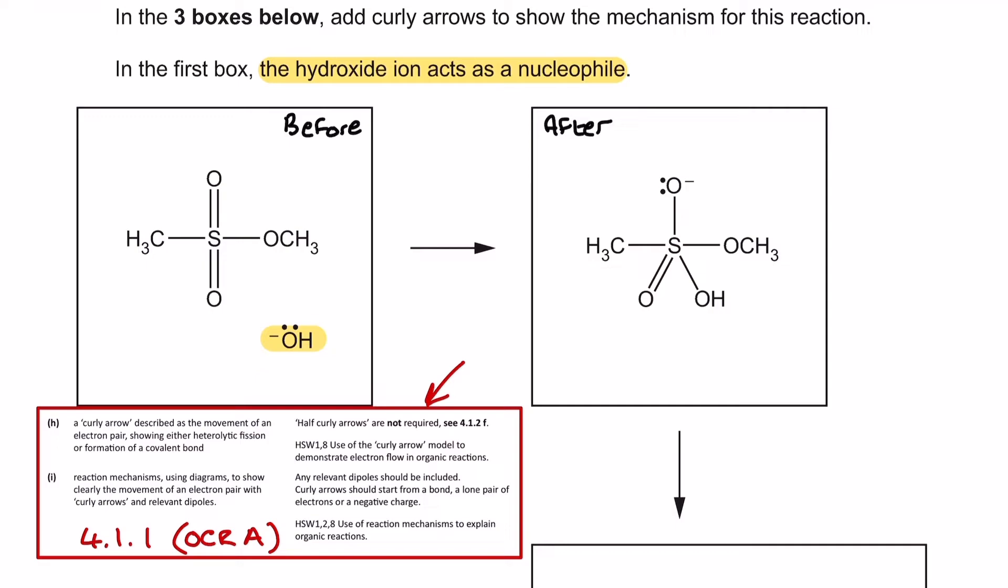Well, let's consult our before and after. If we look at the product side here, we've got a new bond being formed between the sulfur and what looks to have been the hydroxide ion before. So, using my curly arrow, starting from the lone pair of my nucleophile, I'm going to go up here.